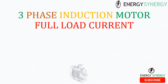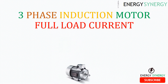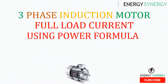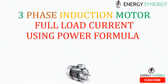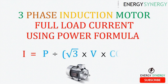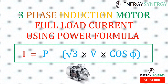It is very much required to calculate the full load current of induction motors. The formula for calculating full load current of a three-phase induction motor is: Full Load Current = Power / (√3 × V × cos φ), where power is in kilowatts and current is in amperes.